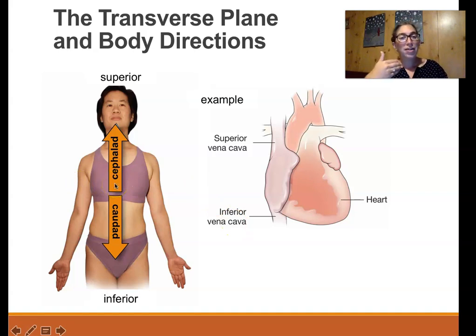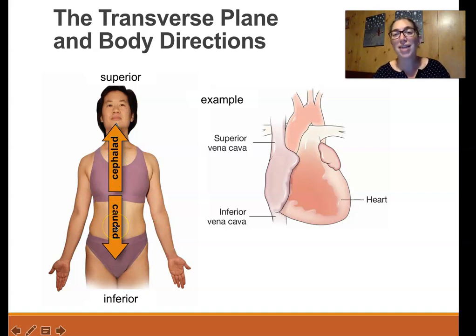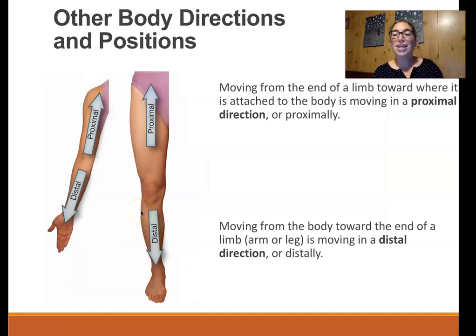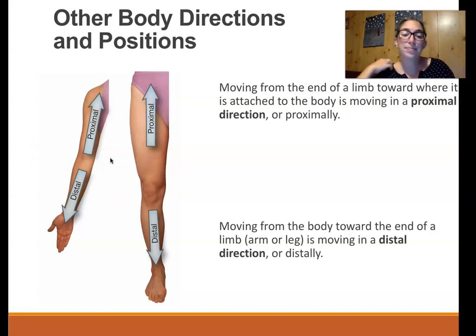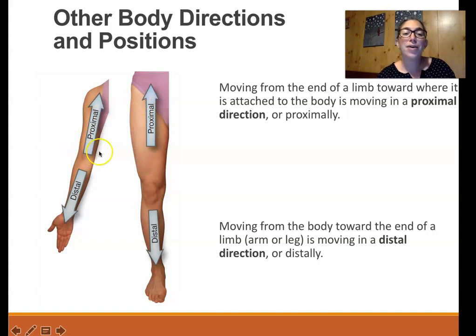If we are moving up and down the trunk, the directional terms are cephalad — cephalo is a combining form that means head, so cephalad means towards the head — and caudad, where caudo means tail, so it means towards the tail. These are terms for moving up and down the trunk. We have different terms for moving up and down the limbs. Moving towards the end of a limb, towards your fingers or toes, is a distal direction. Moving up the limb towards the joint like the shoulder or hip is a proximal position. Your knee is distal to your hip, but your elbow is proximal to your hand.